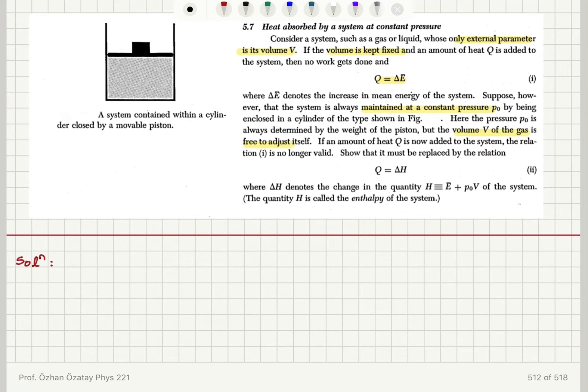Show that it must be replaced by the relation Q is equal to delta H, where delta H denotes the change in the quantity E bar plus P0V of the system.